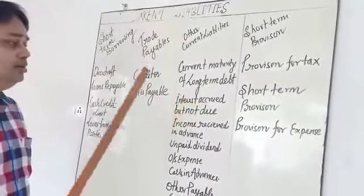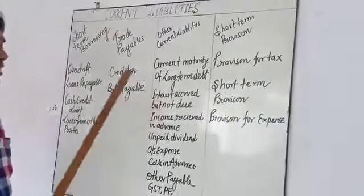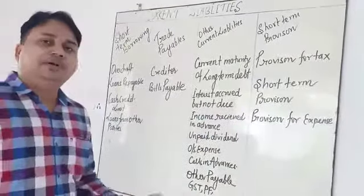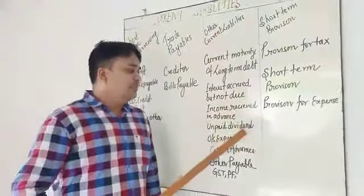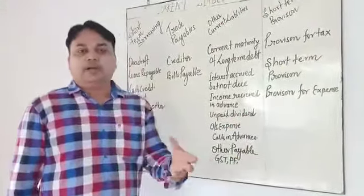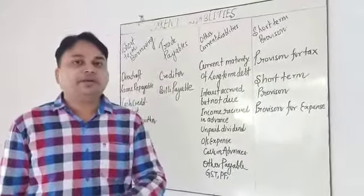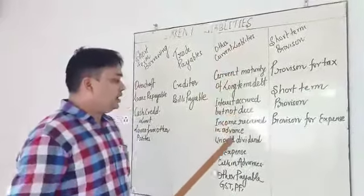Interest accrued but not due also comes under other current liabilities. Income received in advance - whenever you receive any income in advance, it comes under current liabilities. Unpaid dividend is also simple. When dividend is declared but payment has not been made, the company will show it under other current liabilities.